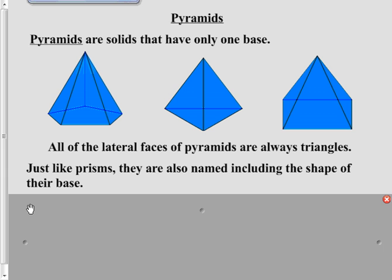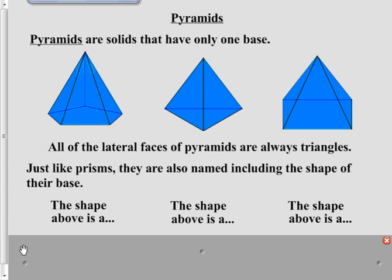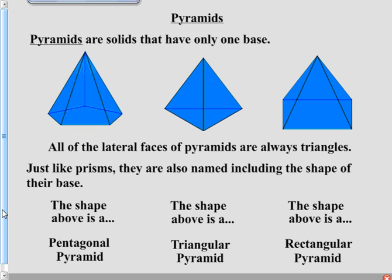Now, just like with the prisms, we have a little bit of a specialized naming system, and it will once again involve the shape of the base. So in the three shapes you're looking at up there, they are obviously all pyramids. But we wouldn't just call them pyramid, pyramid, and pyramid. We would name the shape of the base. The one on the left is a pentagon for its base. The one in the middle is a triangle for its base. The one on the right is a rectangle for its base. So we would say that they are a pentagonal pyramid, triangular pyramid, and rectangular pyramid.